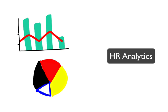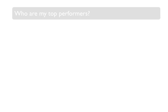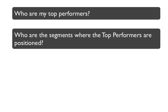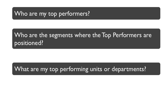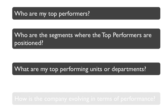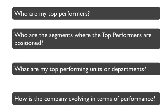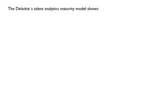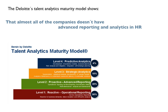If you are part of a human resources department, you've probably reflected upon the following questions: Who are my top performers? Who are the segments where the top performers are positioned? What are my top performing units or departments? How is the company evolving in terms of performance? These are simple questions, but do you have the answer for each of them? Deloitte's Talent Analytics Maturity Model shows that almost all companies don't have advanced reporting and analytics tools related to human resources.